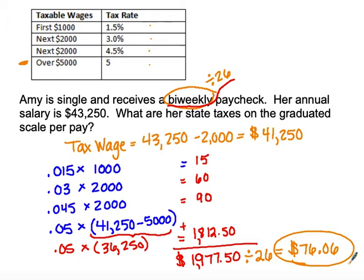To recap: she had to walk through the first $5,000 at different tiers, and then what is left goes into the fourth tier at the much higher rate of 5%. We add all those together to find the yearly state tax, divide it by the number of pays per year, and that's how much state tax is withheld.